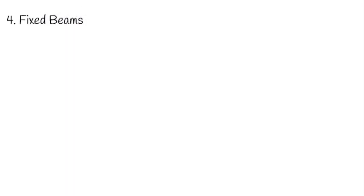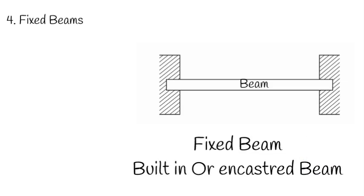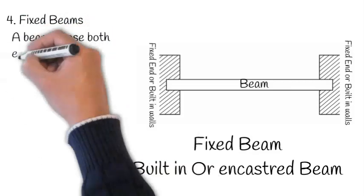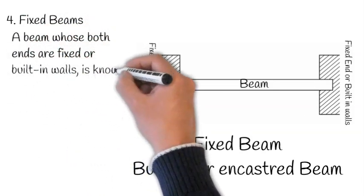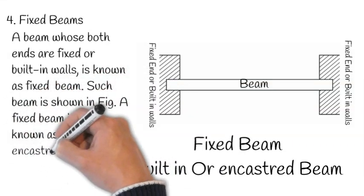4. Fixed Beam: This is the beam. Fixed beam is also called built-in or encasted beam. A beam whose both ends are fixed or built-in walls is known as fixed beam. Such beam is shown in figure.